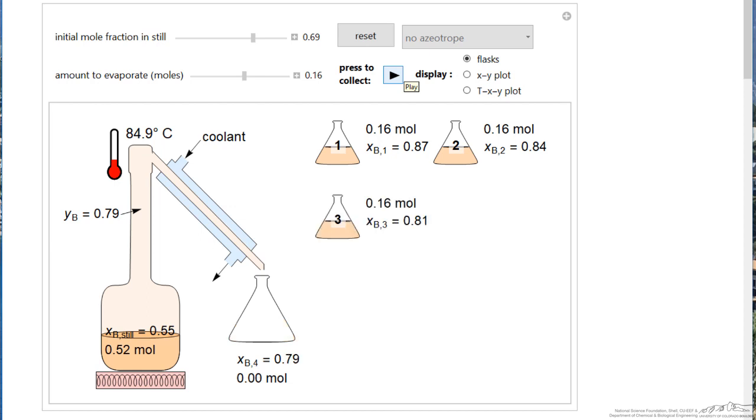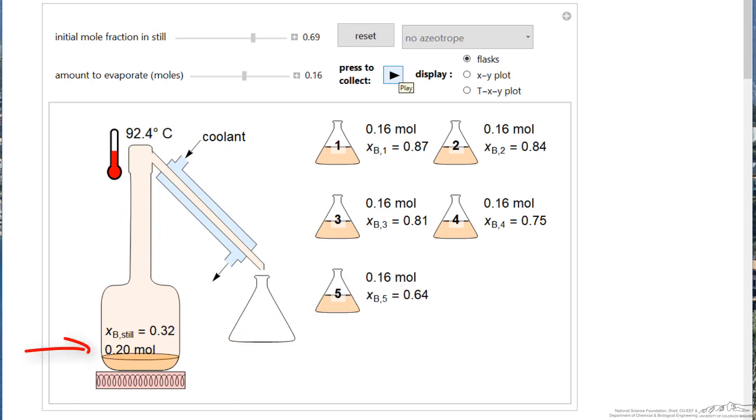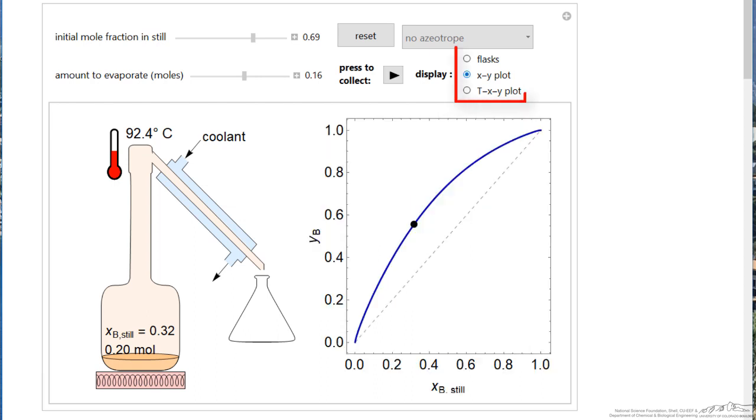And the other thing you'll notice on this simulation is that the temperature in the still is increasing as I carry out this distillation. This is for an ideal mixture. And the other thing you'll notice when it gets to 0.20 moles, it stops. In other words, we don't let the still go dry in this simulation.